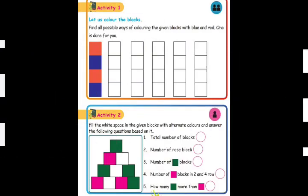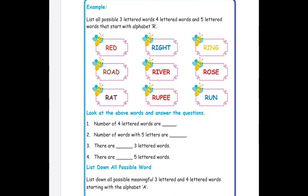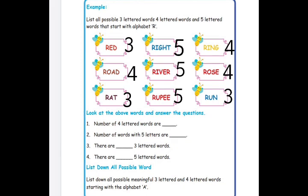Activity one and activity two are your homework. Next example: list all possible three-lettered, four-lettered, and five-lettered words that start with the alphabet R. There are many words given. RED has three letters, ROAD has four letters, RAT has three letters, RIGHT has five letters, RIVER has five letters, RING has four letters, ROSE has four letters, and RUN has three letters.